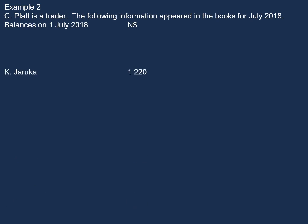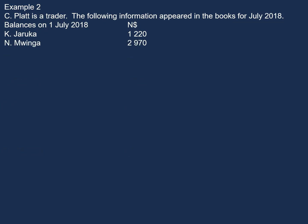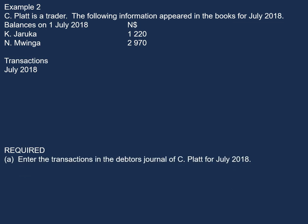We have balances of K. Charuka of $1,220 and of N. Mwinga of $2,970. Now, before we have a look at the transactions for July, let's see what's required.